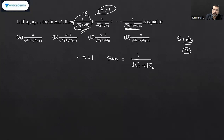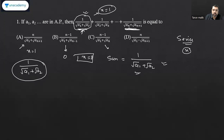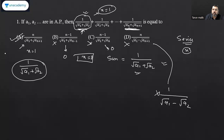So if I put n = 1, the series sum must be 1 / (√a₁ + √a₂). Now I substitute n = 1 into all the options. One option gives 1 / (√a₁ + √a₂) — that matches. Another option gives 0, another also gives 0, and one gives 1 / (√a₁ − √a₂) — which is not my answer. So three options are ruled out and the answer is option A. These are the actual CAT options, and you can see how this trick applies.